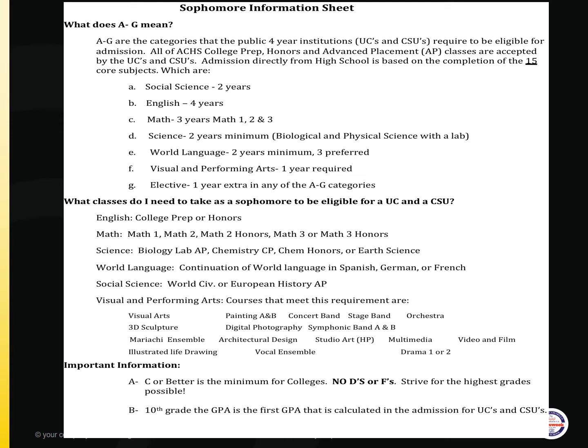Two years of science, area D — a biological and a physical science with a lab. Two years, however three preferred, of a world language, area E. One year of visual performing arts, area F. And one year extra of an elective, area G.